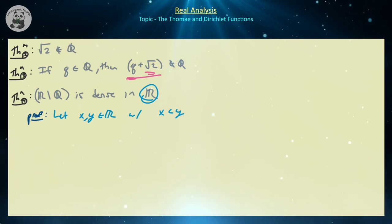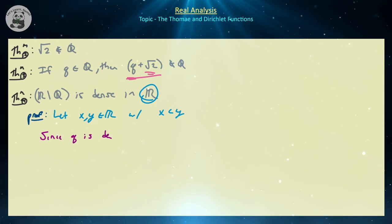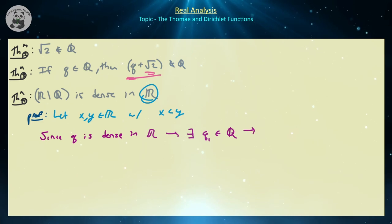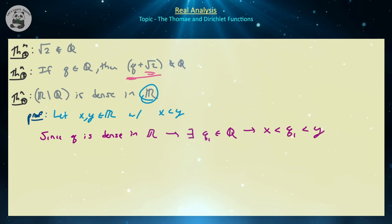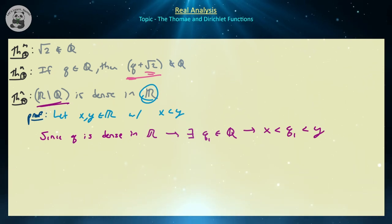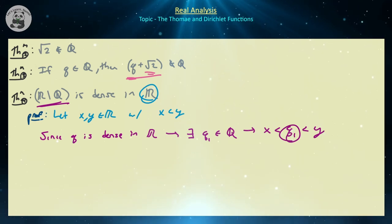An important consequence of these two ideas is that the irrational numbers are also dense in the set of reals, just like the rational numbers are. So let's prove that the irrationals are dense in R. To show a set is dense in R, we need to pick any two numbers x, y in R with x less than y.